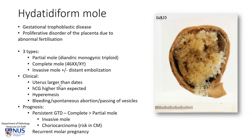Clinically, the uterus is often larger than expected for that particular date of pregnancy or gestation. Measurement of serum HCG values would show that they are much higher than expected. There may be associated hyperemesis, and the patients may experience abnormal bleeding, per-vaginal bleeding, spontaneous abortion, or as mentioned earlier, they may actually pass these grape-like vesicles.